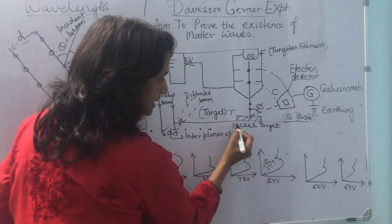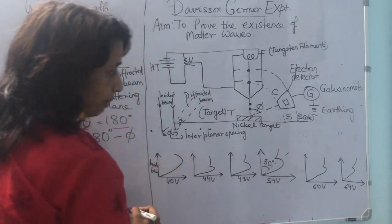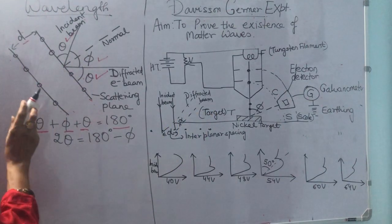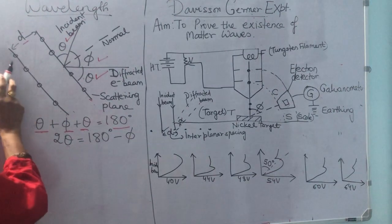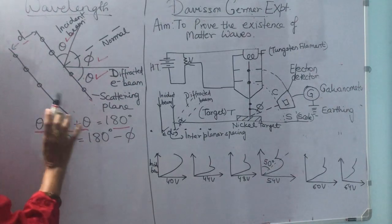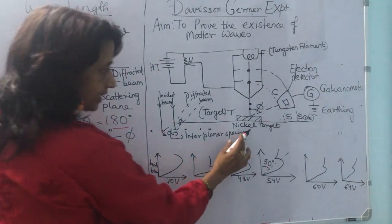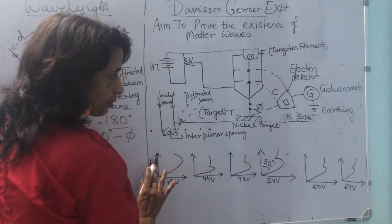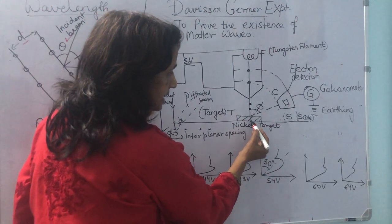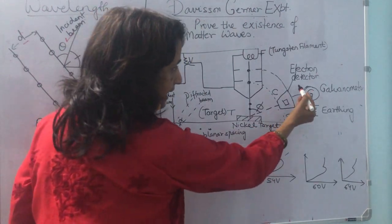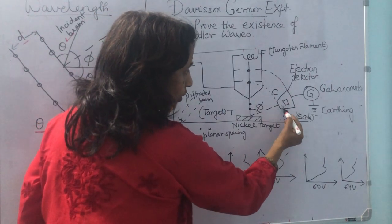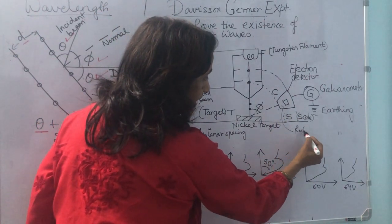We have purposely taken a large nickel target because we are well aware that we are going to use the concept of crystal structure, the interplanar spacing, and a well-defined lattice pattern. So this nickel target will have these properties. Once the electrons get incident on the nickel target, they are diffracted towards an electron detector, which is basically a rotating Faraday cylinder.